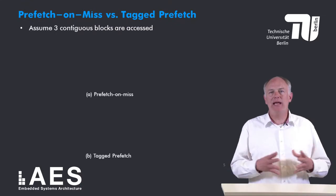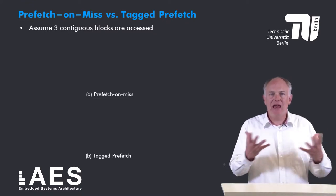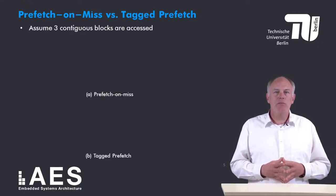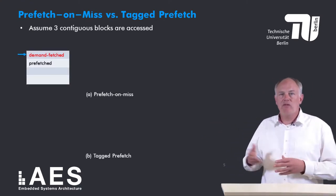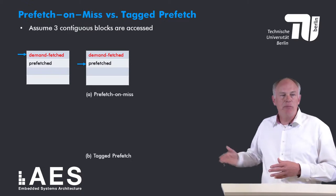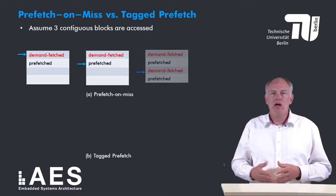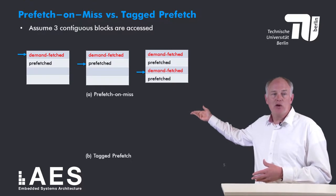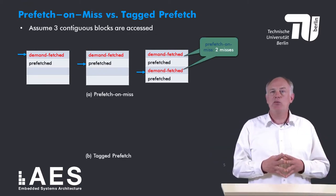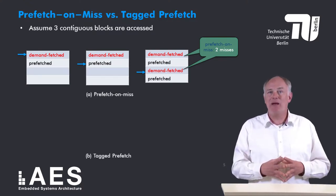This slide briefly explains why tag prefetch is more effective than prefetch on miss. Suppose the application accesses three consecutive blocks that are not cached. In the prefetch on miss scheme: the first block is fetched on demand; since it is a miss, the next block will be prefetched; then the prefetched block will be accessed, and since it is a hit, no prefetch for the next block will be generated. So the third block will be fetched on demand again, corresponding to a miss, and the fourth sequential block will be prefetched. Overall, prefetch on miss incurs two misses: one for the first block and one for the third block.